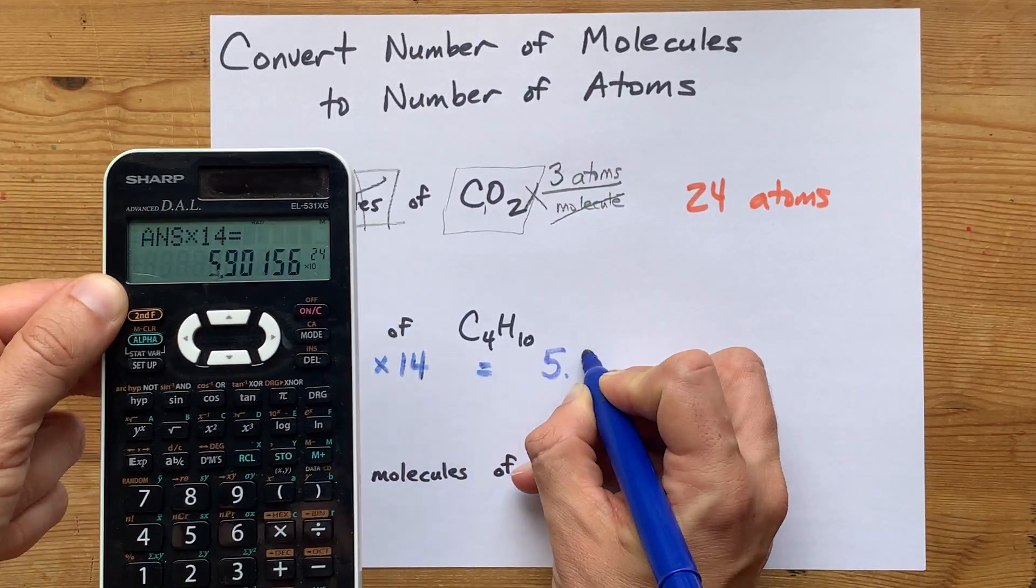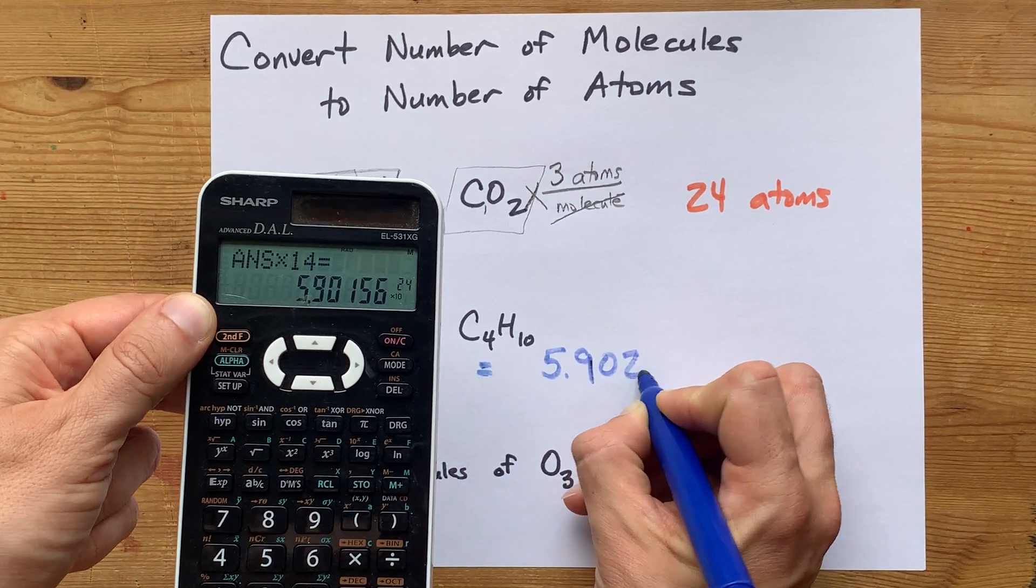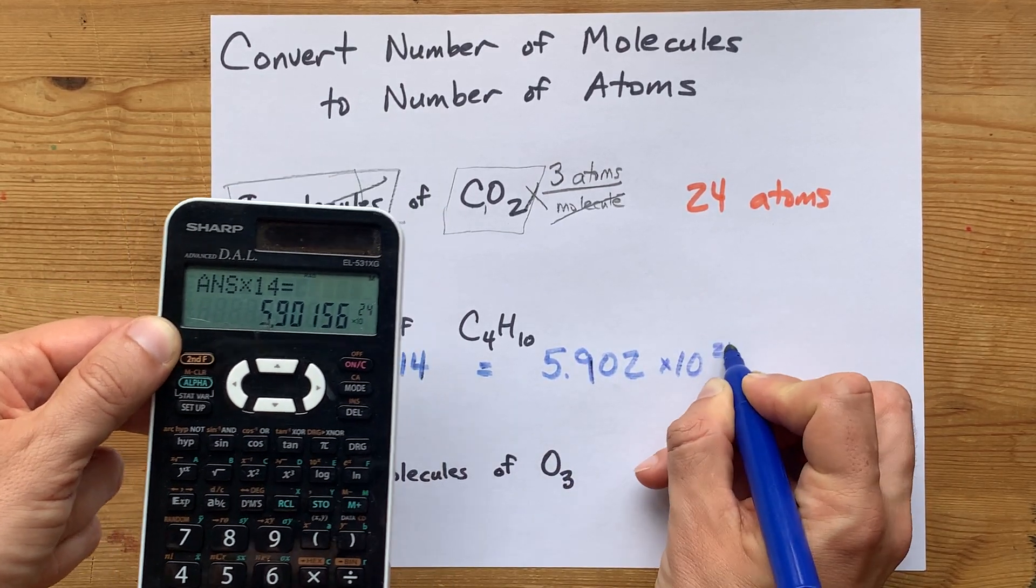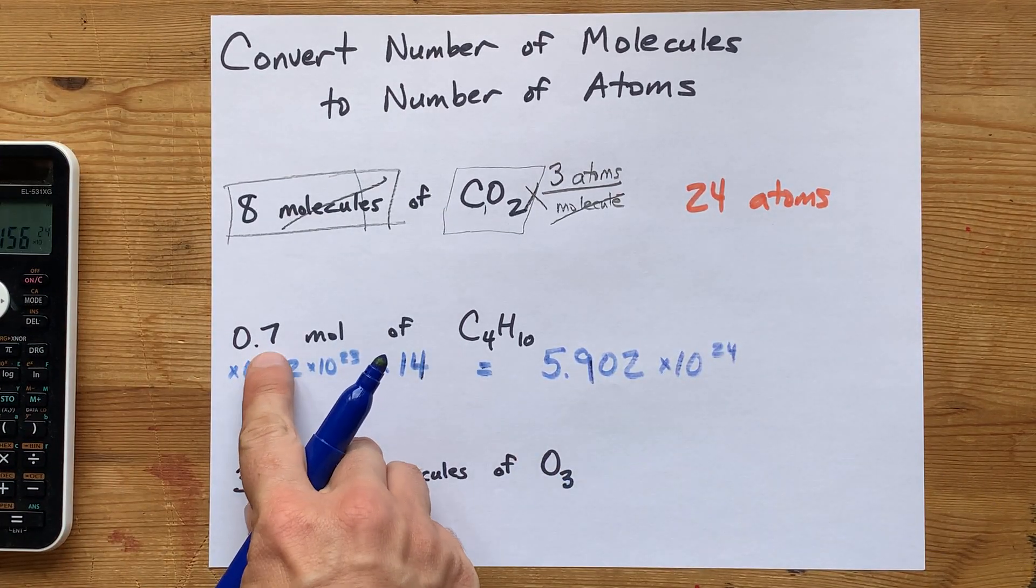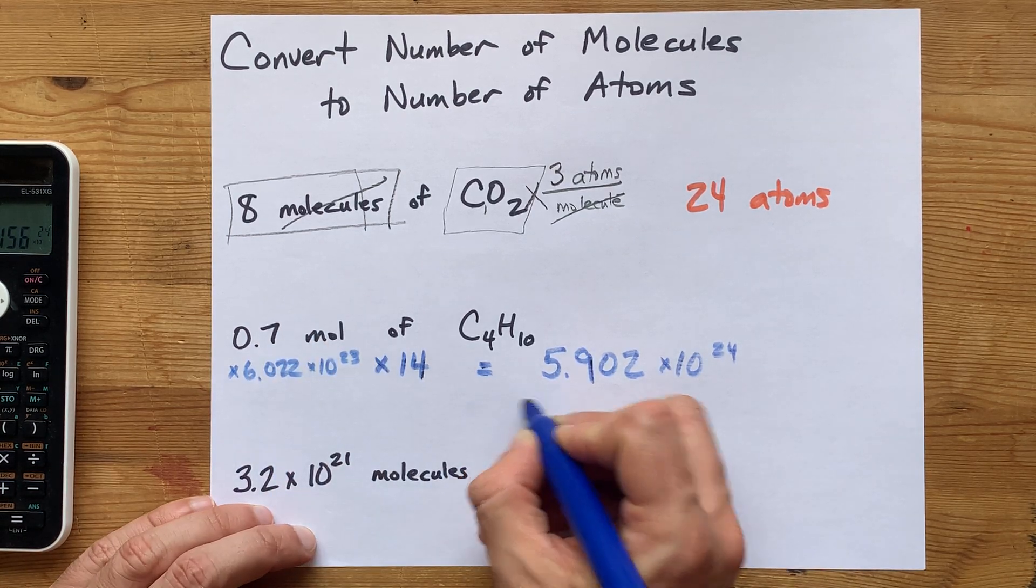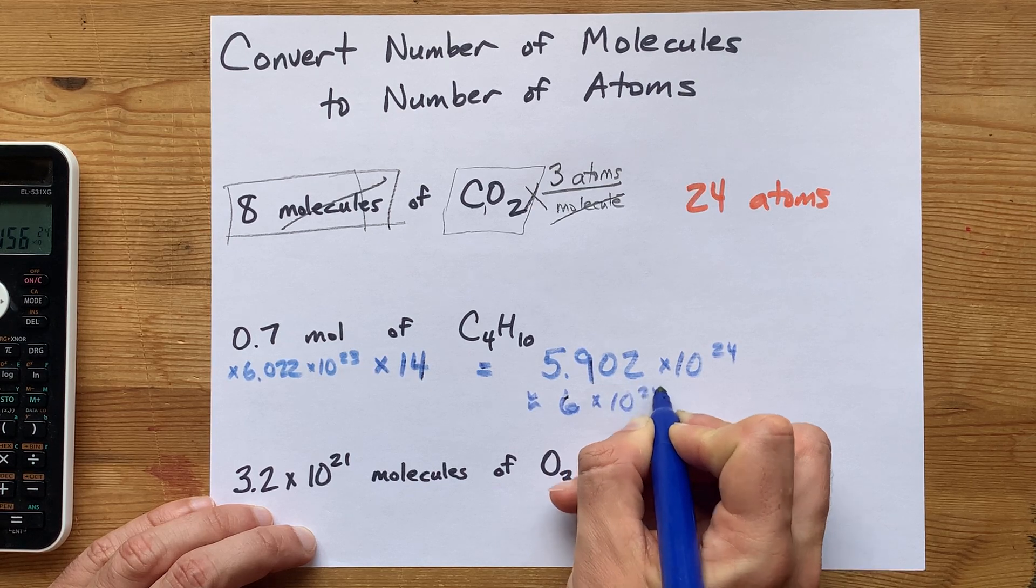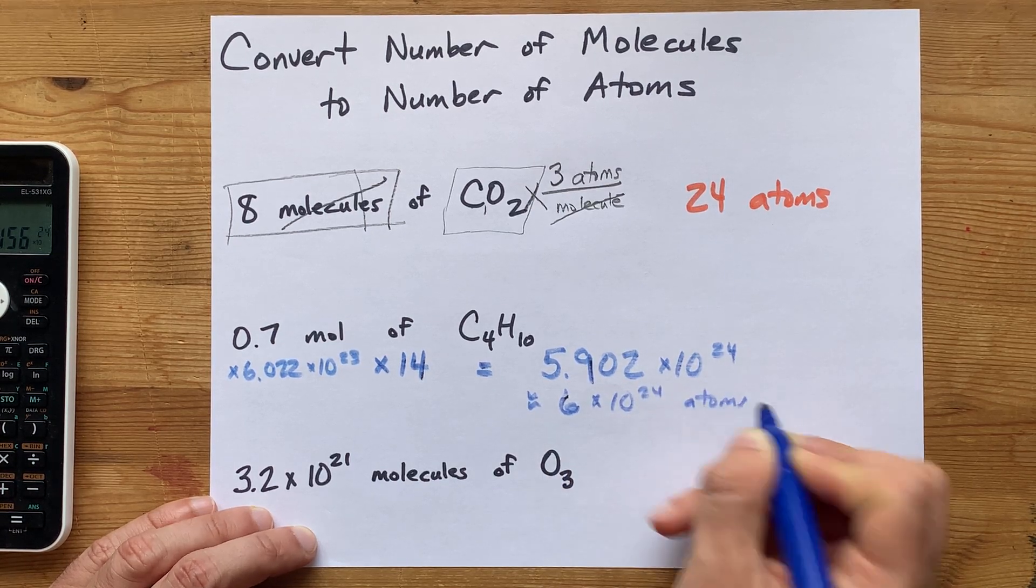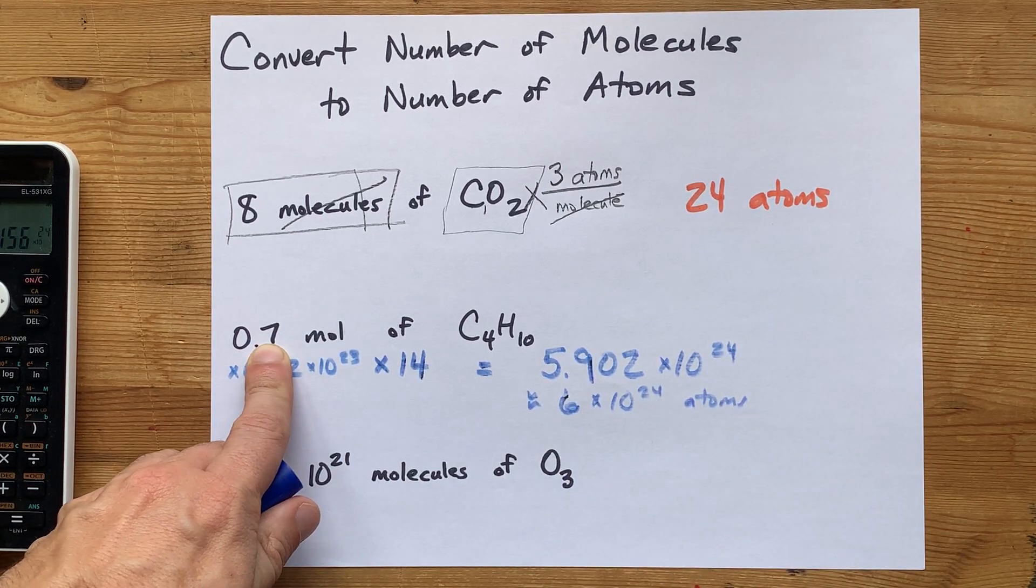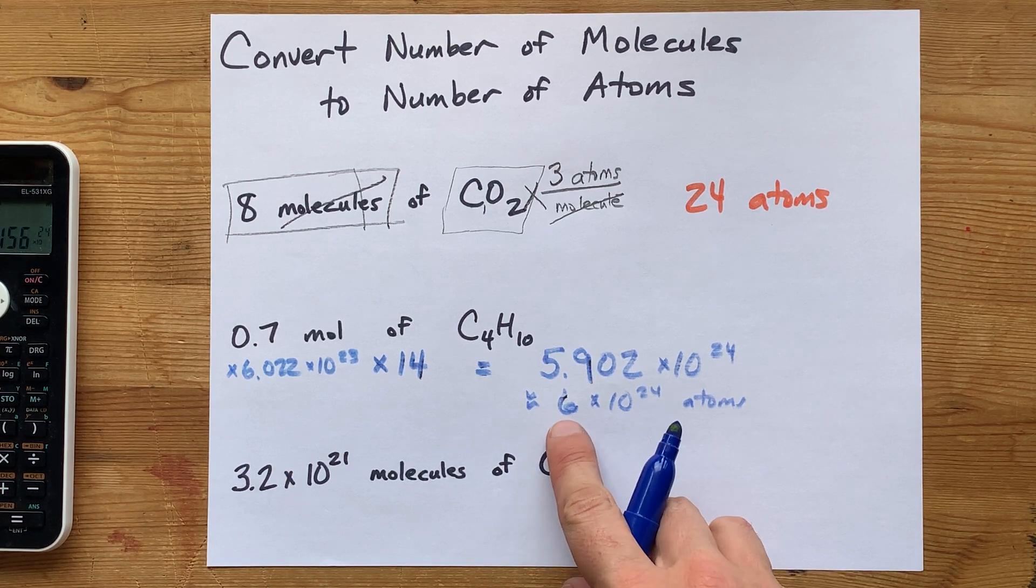I end up with 5.902 times 10 to the 24 with significant figures. That actually ends up being 6 times 10 to the 24 atoms. That only had one significant figure there, so I can only use one significant figure there.